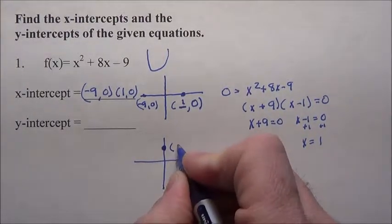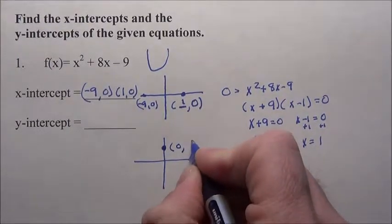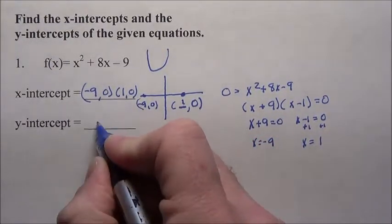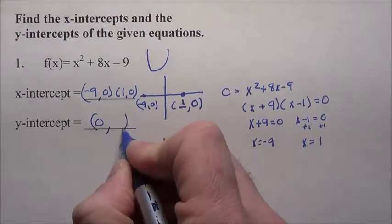Well, where's that point? I've gone over, well I know I've gone over none. How much have I gone up? I don't know, that's what I'm trying to find. So I know this is going to be zero comma something.